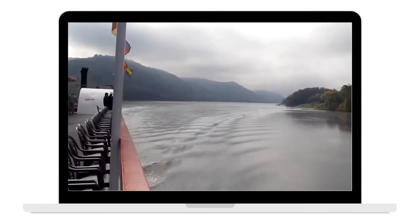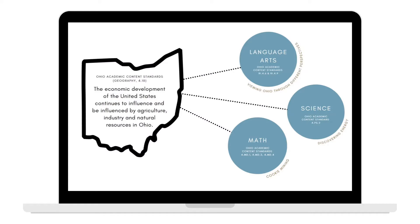This Ohio Social Studies unit is constructed of three lessons: Language Arts, Science, and Math. Each lesson and the unit as a whole are aligned with at least one Ohio academic content standard.